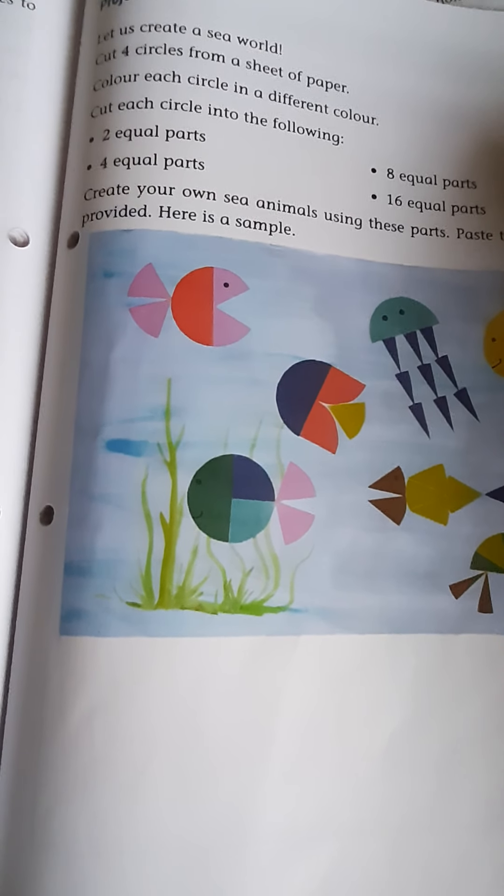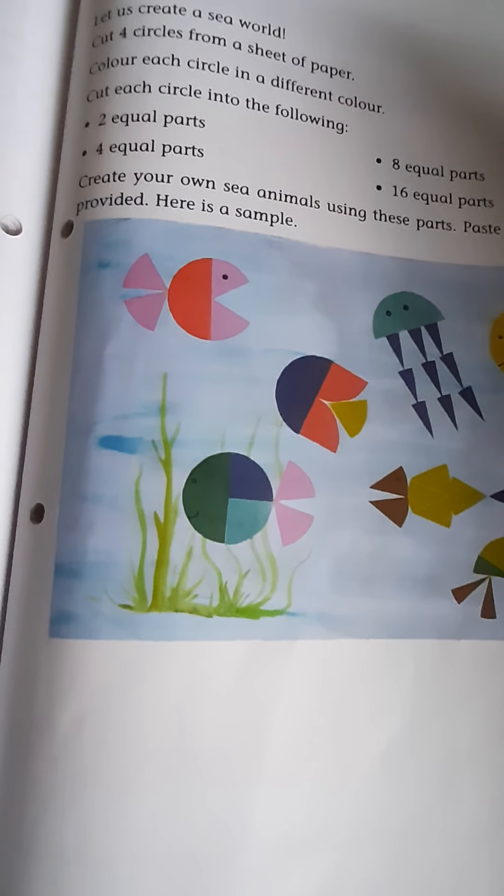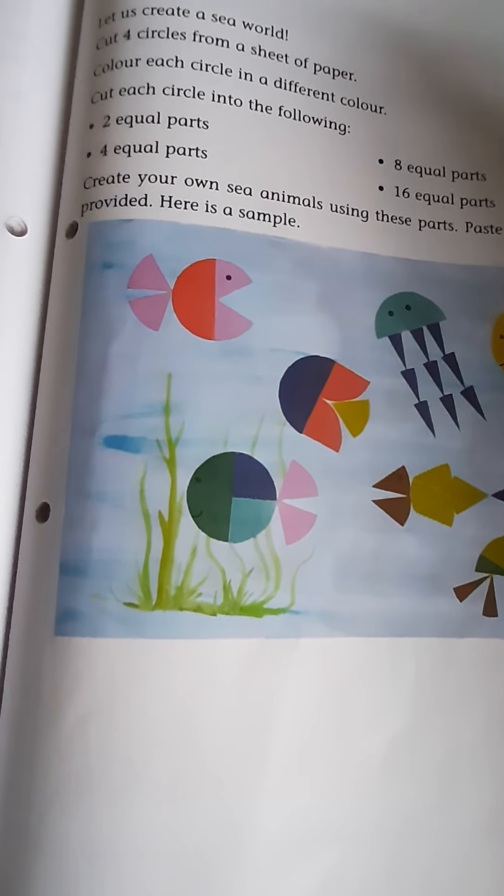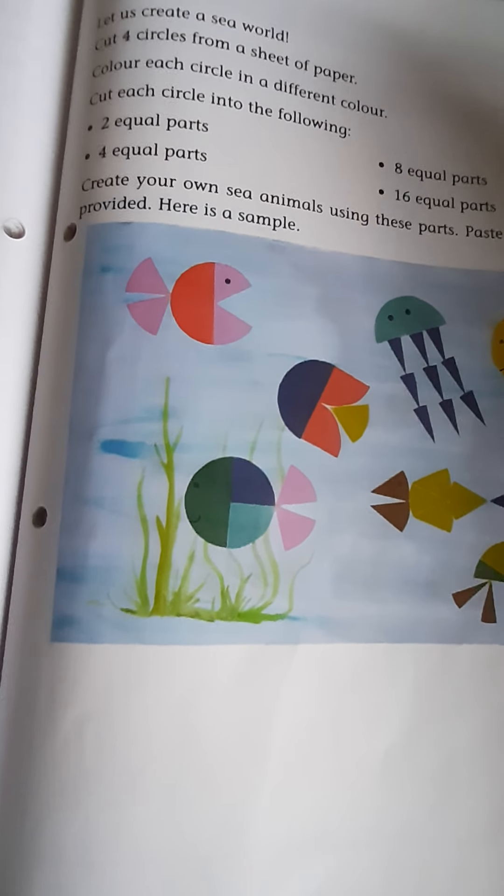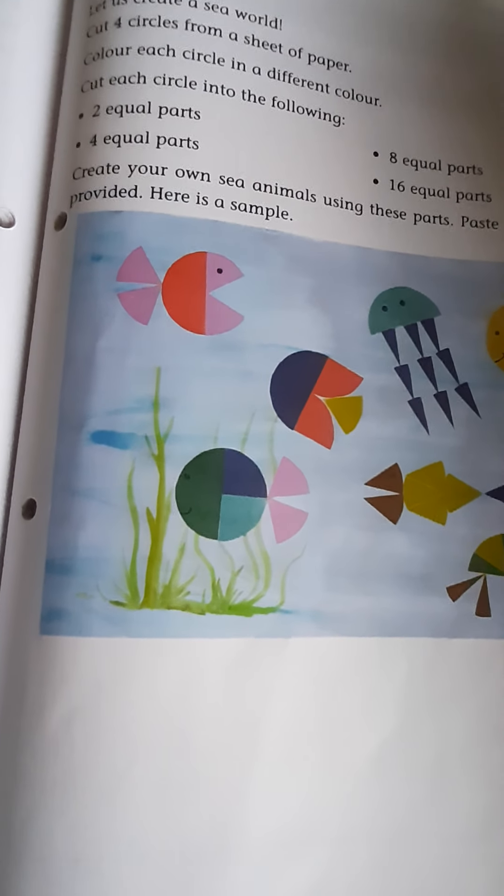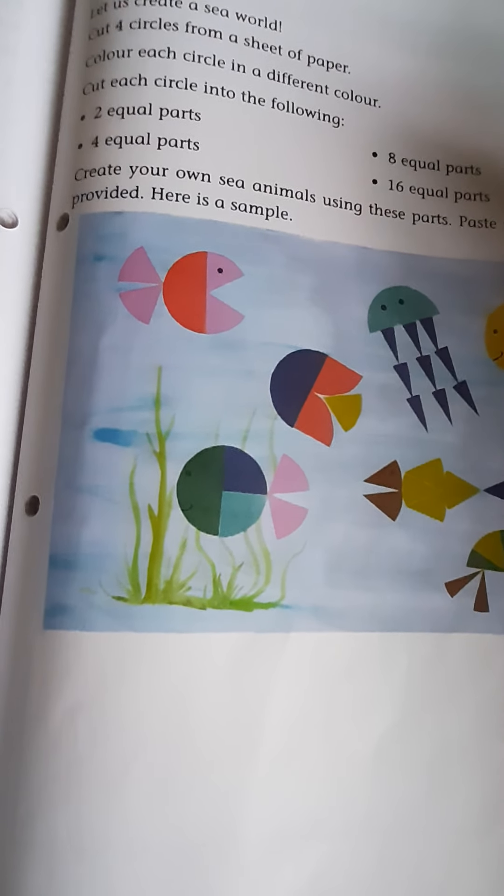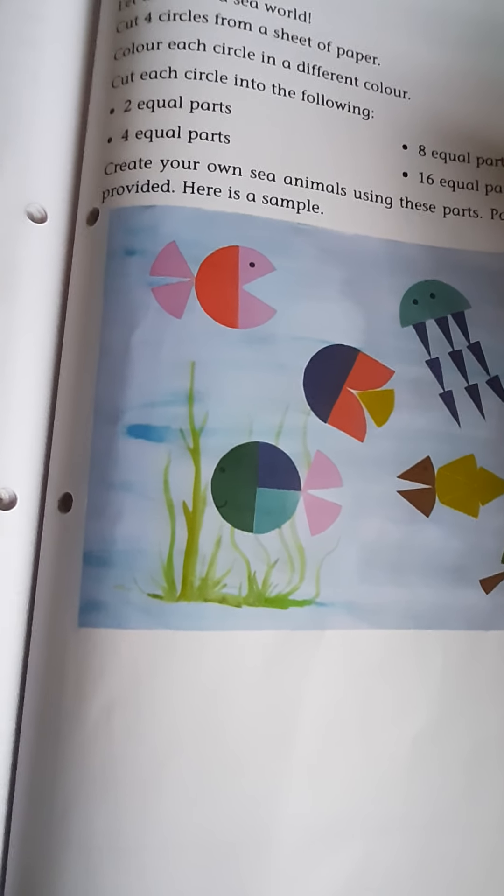Cut 4 circles from a sheet of paper. First what you have to do, you have to cut 4 circles from a sheet of paper. So color each circle in a different color. You have to color each circle in a different color. So cut each circle into the following.